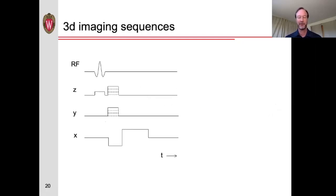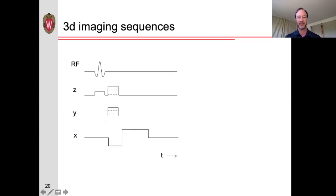We've been talking so far about 2D imaging sequences. It is also possible to collect data in 3D using additional phase encoding in the third dimension. Instead of just phase encoding in the Y direction, you also vary the phase encoding in the Z direction. Each time you excite, you're exciting not just a single slice, but rather a slab or entire brain volume, doing phase encoding in both the Y and Z directions.